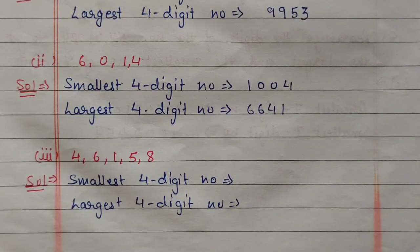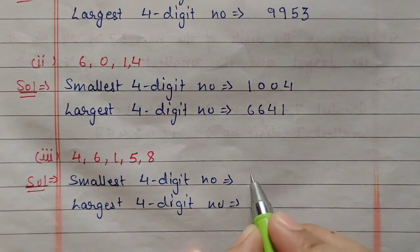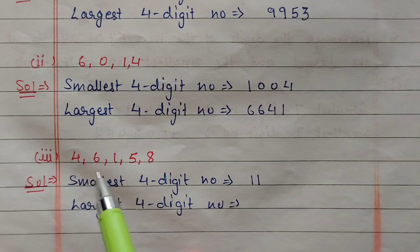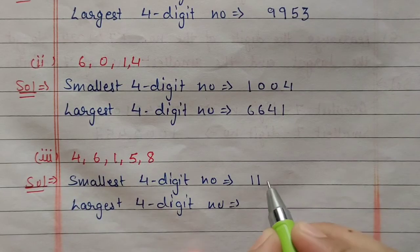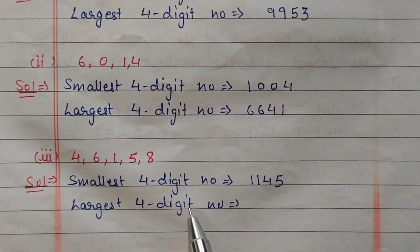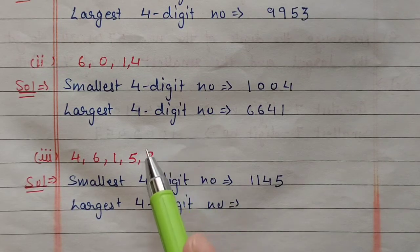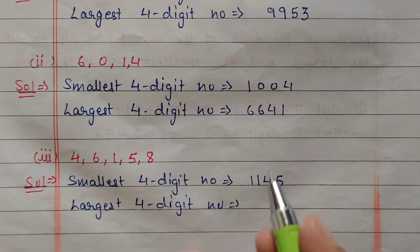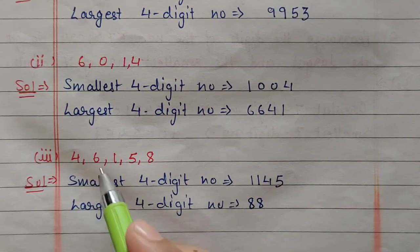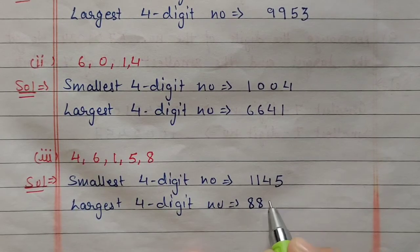For the next set of digits, the smallest digit is 1. Repeat 1 twice, then after 1 we have 4 and then 5, giving the smallest number. To make the largest 4-digit number, the largest digit is 8. Repeat 8 twice, then 6 and 5, giving the largest number.